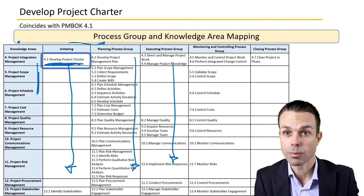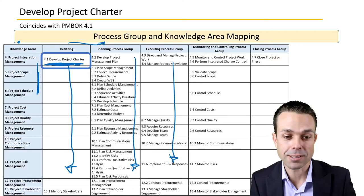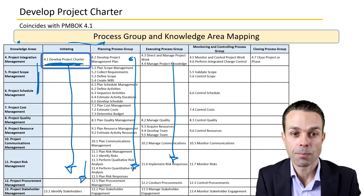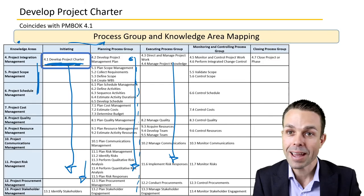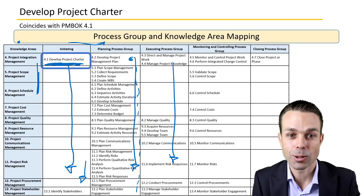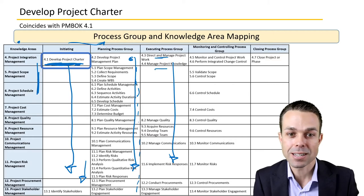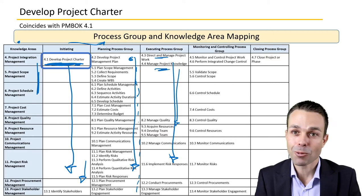For example, we're developing the Project Charter, but we're also identifying the stakeholders, as you can see down the bottom. Then we're developing that project management plan and all of the bits and pieces that will go into it, one by one. Then we're executing the project — directing and managing the project work, managing that project knowledge, and so on.